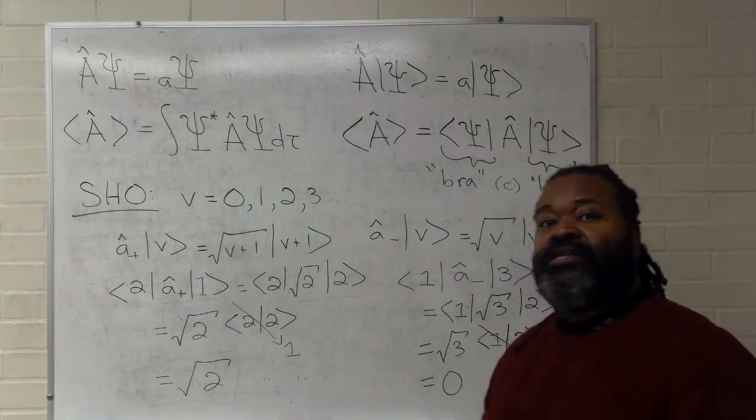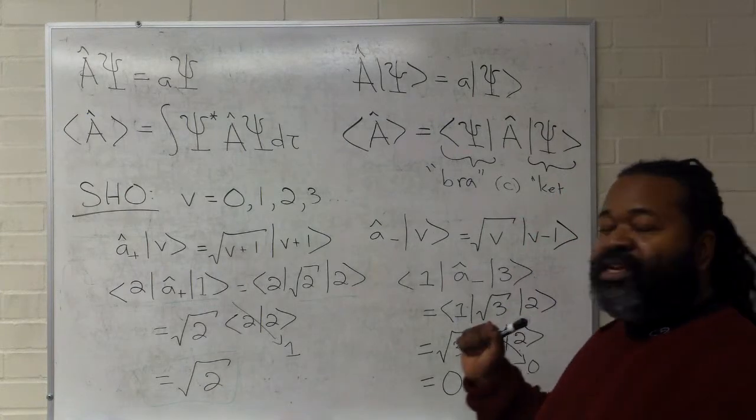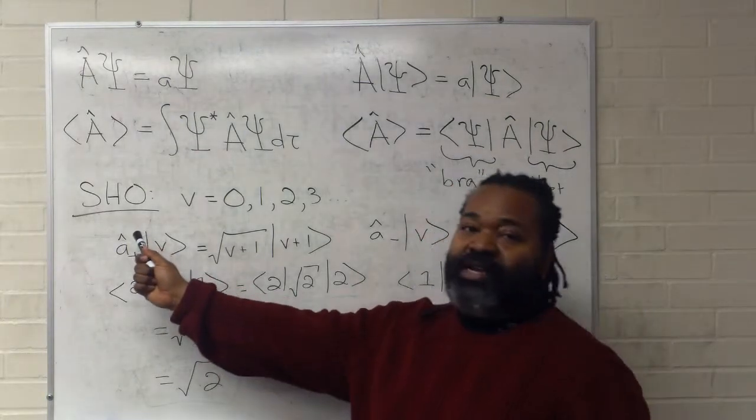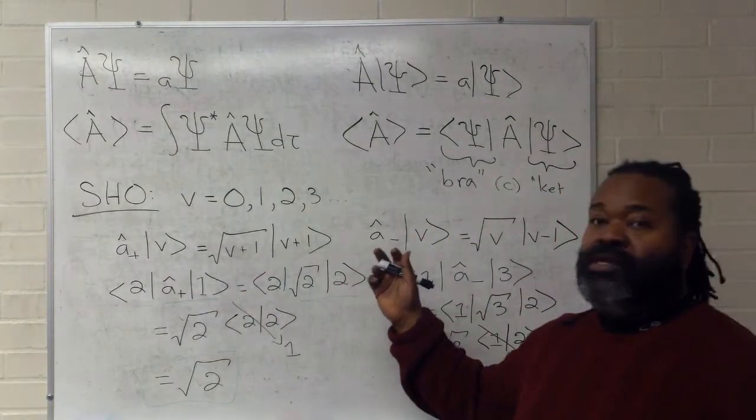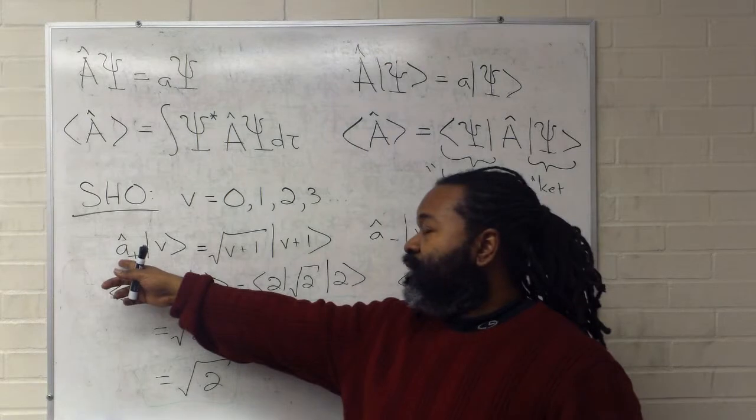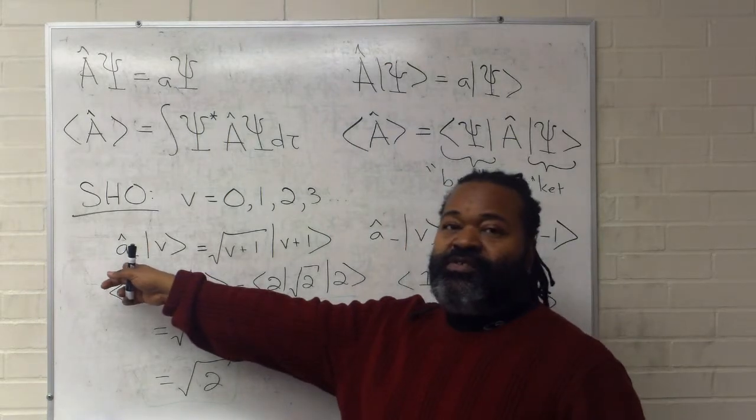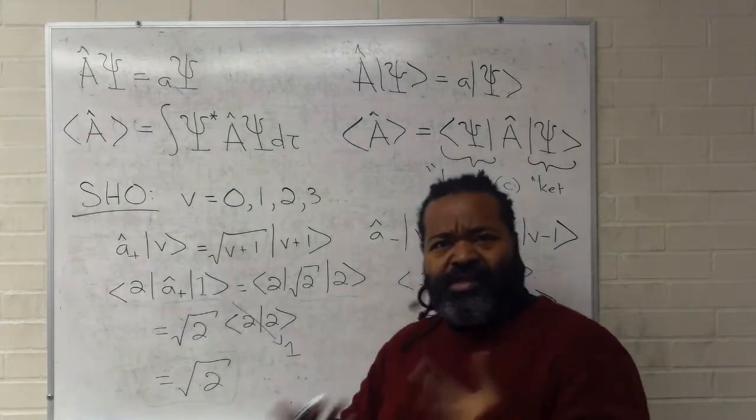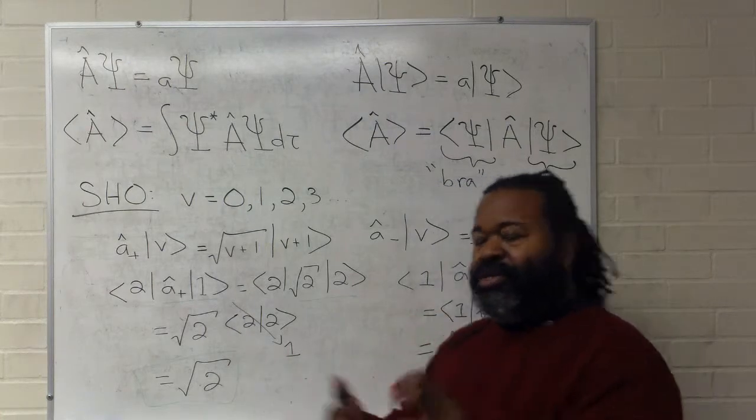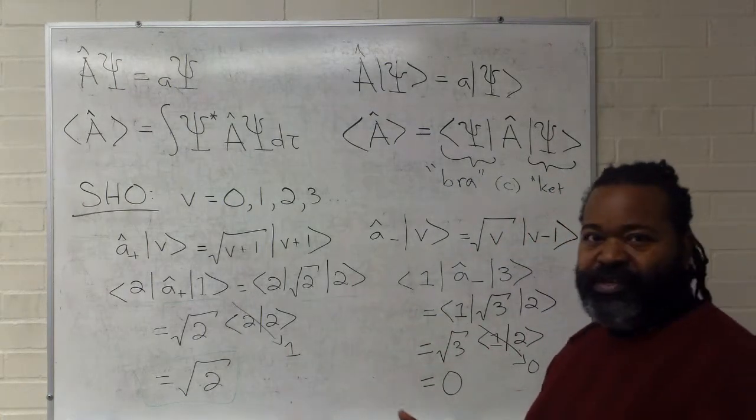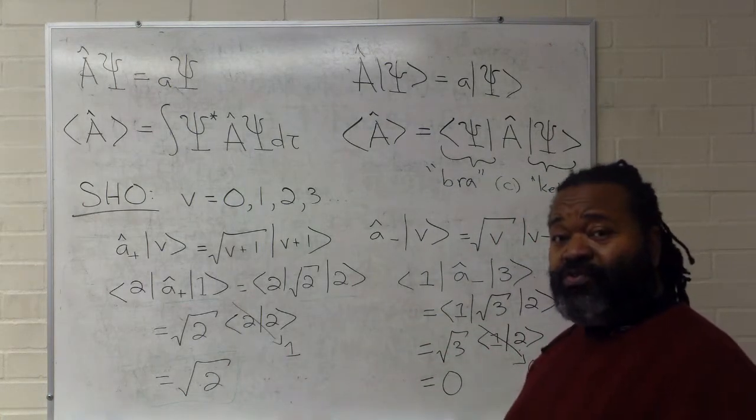So, the premise behind using Dirac notation is that if I were to write out the entire harmonic oscillator wave function, and the entire description of this operator, which involves a mixture of position and momentum, then that gets very complicated. It's a great deal of awful algebra.